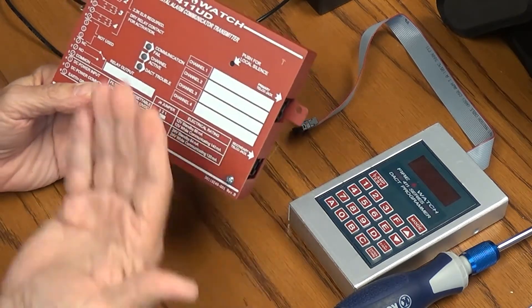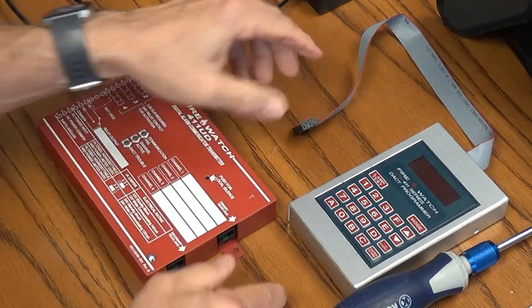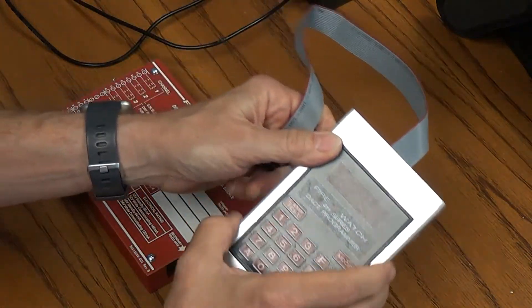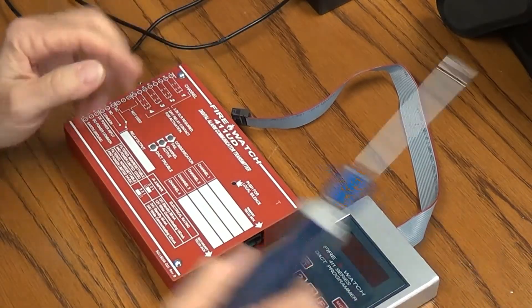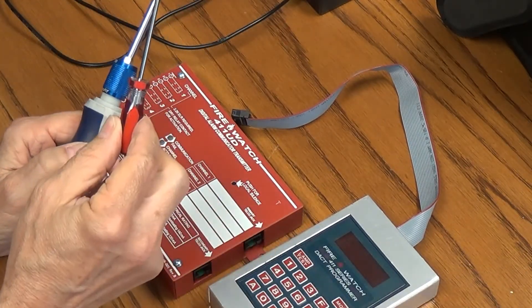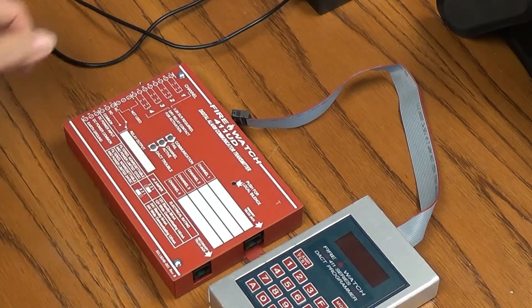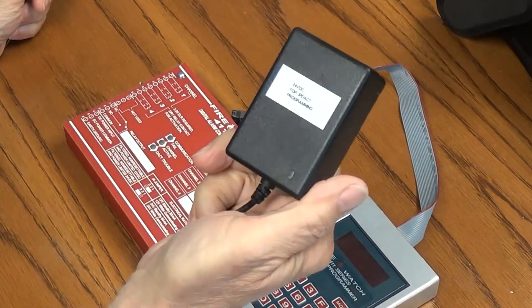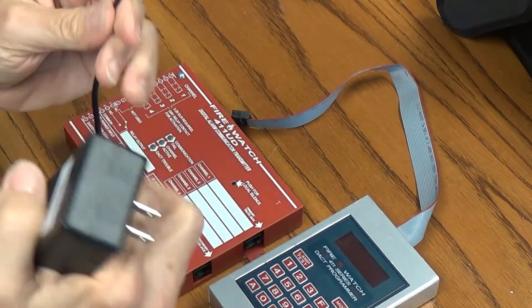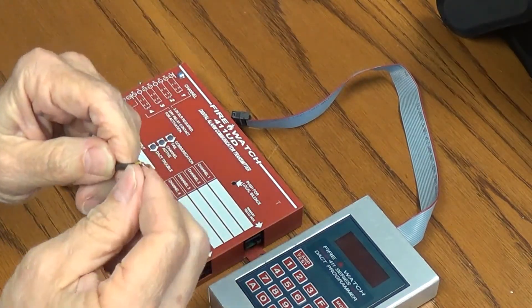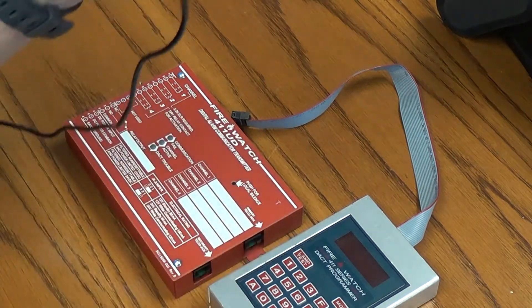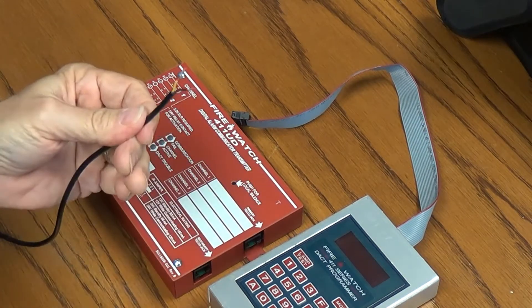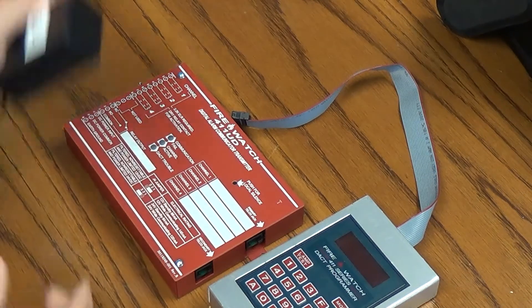So what you need is the FireWatch 411 to program. You're also going to need the FireWatch 411 Series DACT Programmer, which is crucial. And then you'll also need a Phillips screwdriver and a small standard screwdriver for connections. Last but not least, you're going to need a 12-volt or 24-volt DC adapter. We just stripped it back to show the two wires, black being ground and yellow being positive. You'll need that to power the card so we can do the programming.